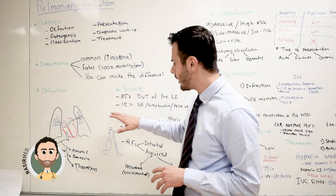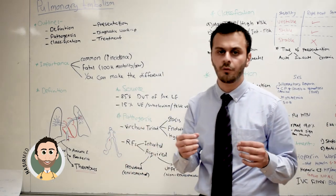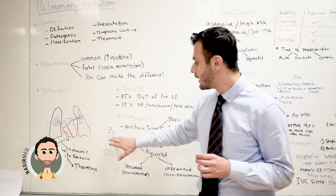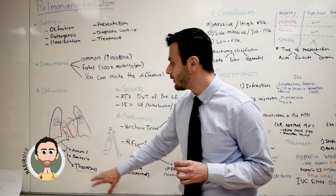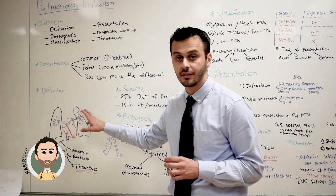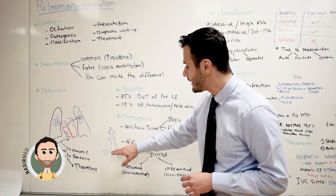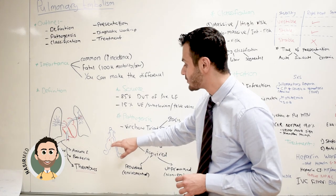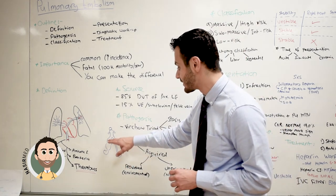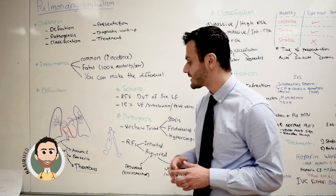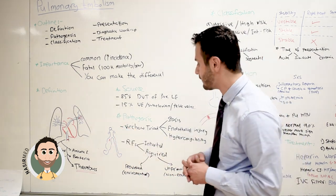Now, moving on, let's trace the route of this blood clot from the proximal lower extremity all the way to the lung. First, you can see a patient with deep vein thrombosis of the right lower extremity — mainly the proximal side, such as the femoral vein.